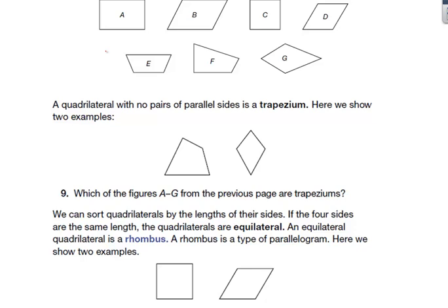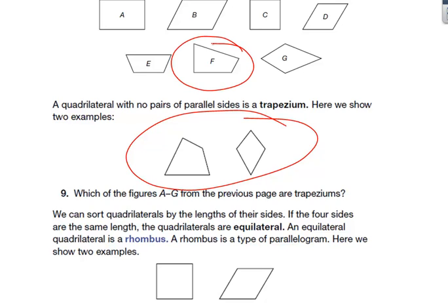A quadrilateral with no pairs of parallel sides is called a trapezeum. Here we are shown two examples. Which figures A through G would fall into that category? It would be F and G — they are trapezeums.